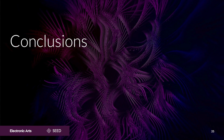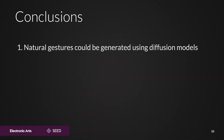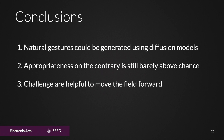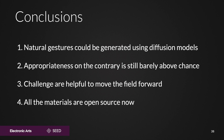So, what are the takeaways from this challenge? First, natural-looking gestures can be generated using diffusion models, and not only using motion graphs, as was seen in the Genia Challenge 2022. Second, appropriateness, both for speech and the conversation partner, is far from a solved problem. Third, challenges like this one help move the field forward and help identify where the state of the art currently lies. Finally, all the materials from the Genia Challenge, including code, motion, videos, ratings, and evaluation results, are publicly available for everyone to use.